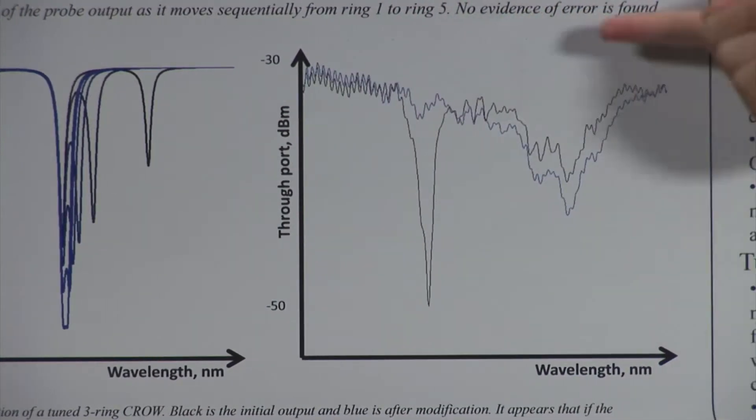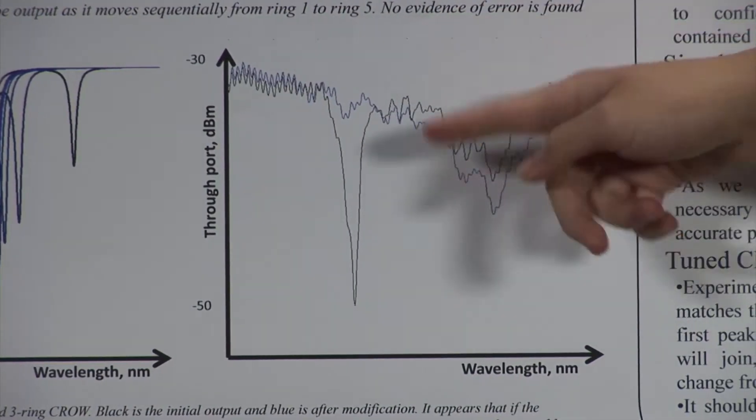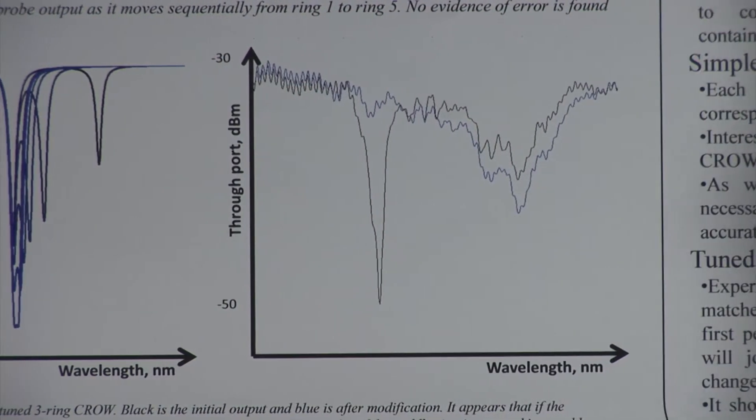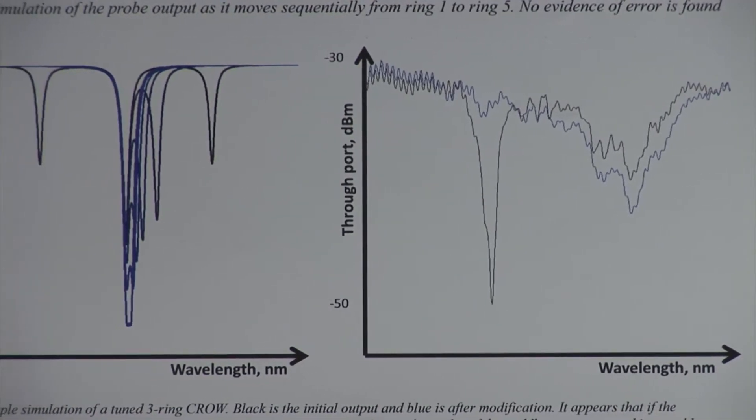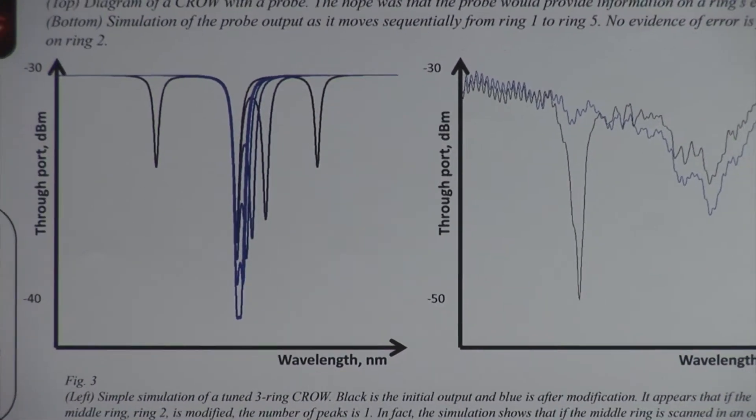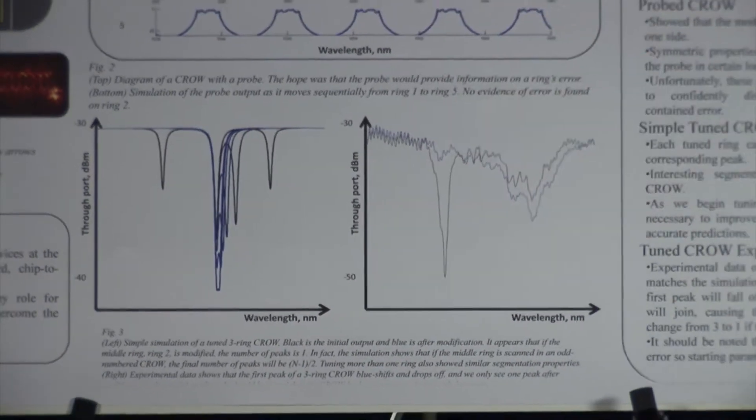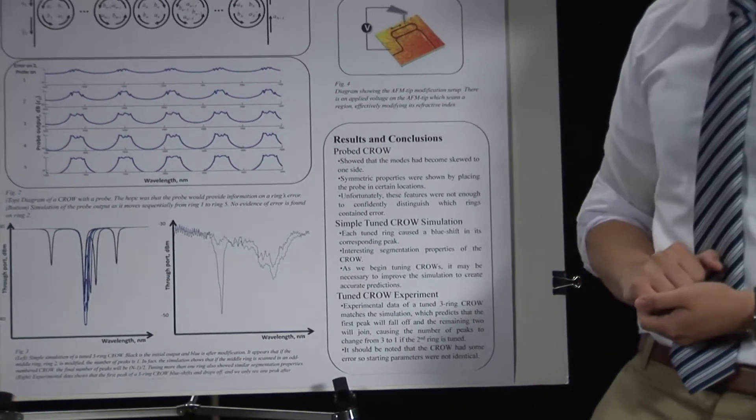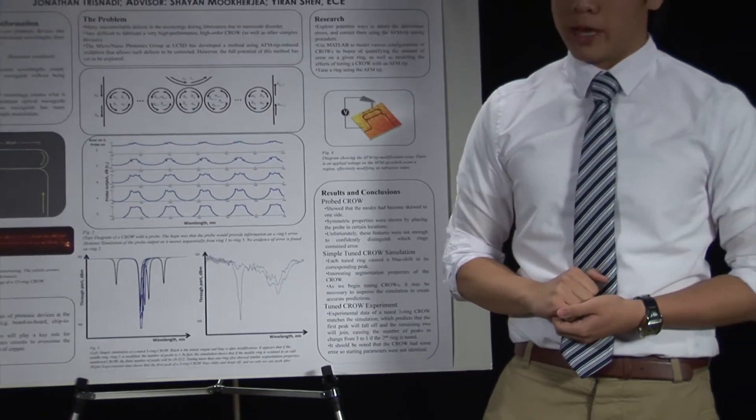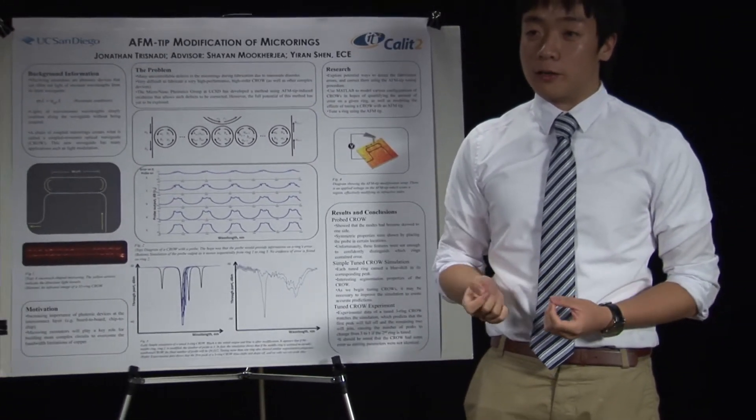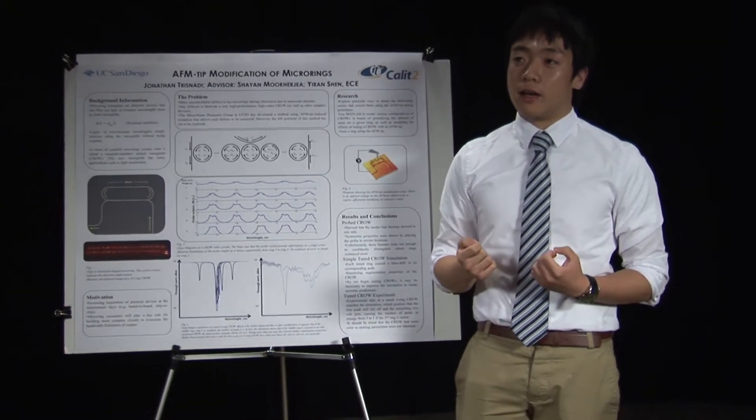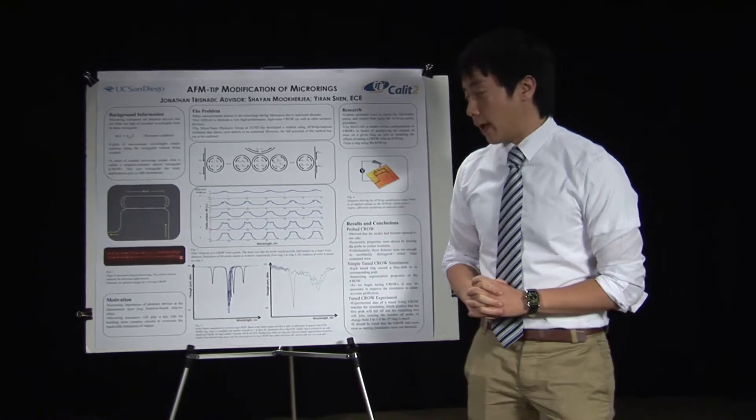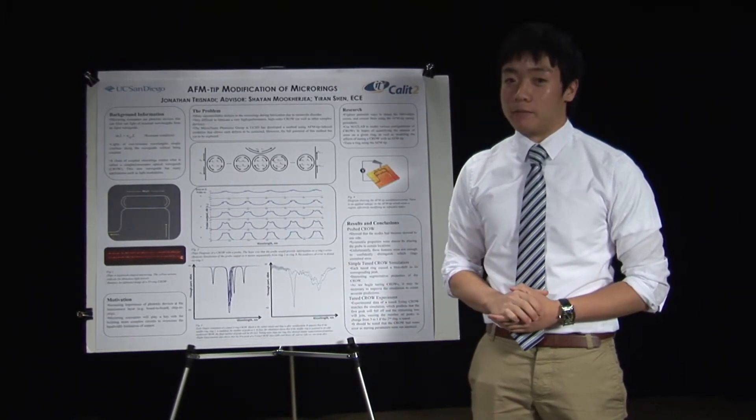But if you look at it, this one's a bit more noisy and a bit messier-looking than the simulation. But this leaves room for future work. The simulation was really simple. It took out a lot of factors that could really get this thing messy-looking. But there's hope because the simulation got this one right. And perhaps in the future, we'll be able to tune CROWs perfectly and get very high-performance CROWs that are very complex and long. And that'll be a very exciting time in the field.